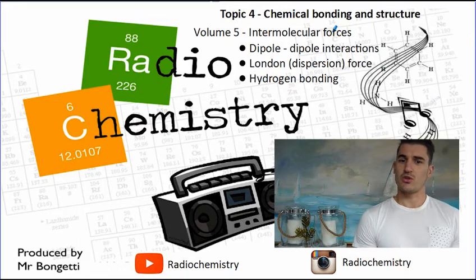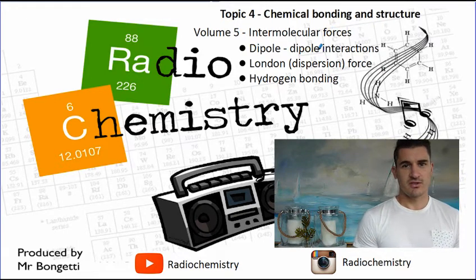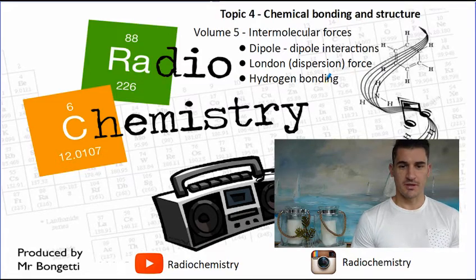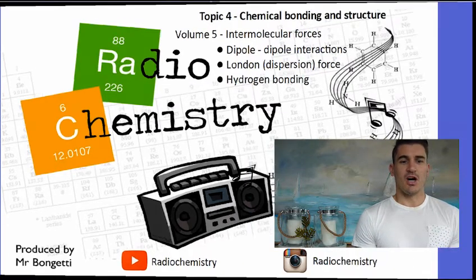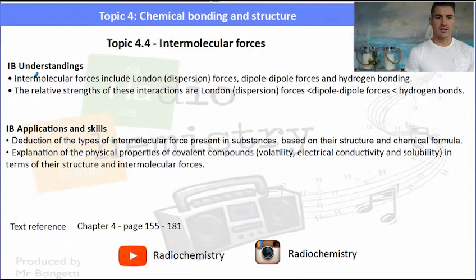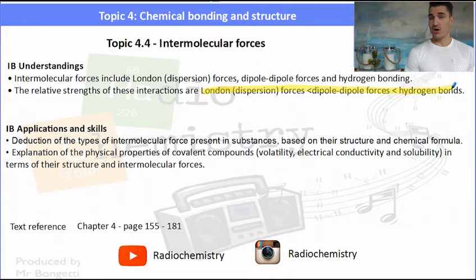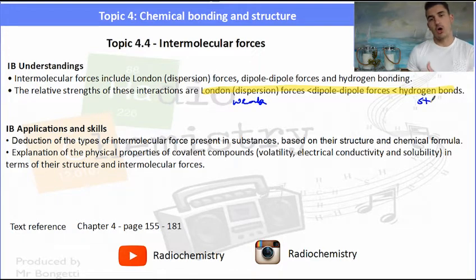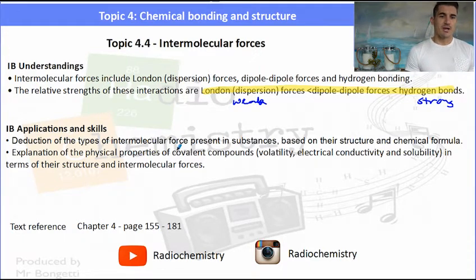Volume 5, Intermolecular Forces. We need to talk about dipole-dipole interactions, London dispersion forces, and identify hydrogen bonding. The IB understandings and applications focus around this intermolecular forces concept. We need to be able to understand the relative strengths of those intermolecular forces, from London dispersion forces being weak, all the way to hydrogen bonding being strong. We need to be able to deduce the types of forces present in molecules and then explain them in terms of their structure.